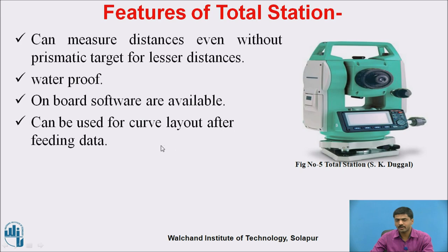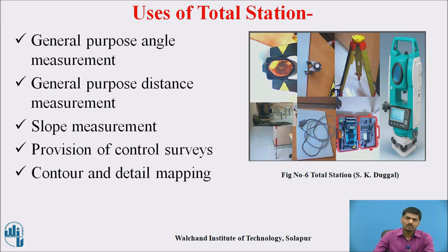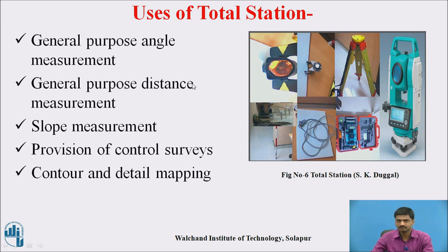It is also used to prepare a core layout after feeding data. The uses of this particular Total Station include general purpose components: reflectors, cables, prism poles, prism, tripod. The general purpose is to measure angles — it may be horizontal angle or vertical angle — and to measure distances, horizontal distances and vertical distances. Whenever measurement work is needed, that is airport work, railways, highway, or canals, we are using Total Station nowadays.